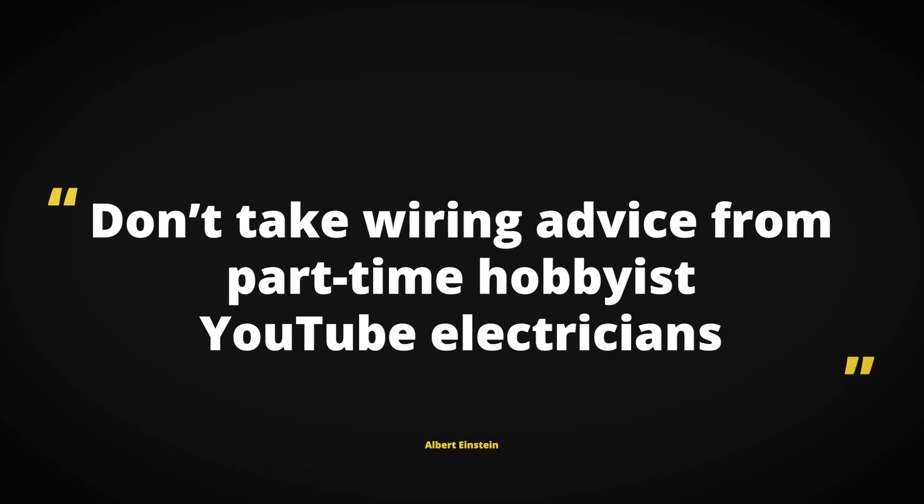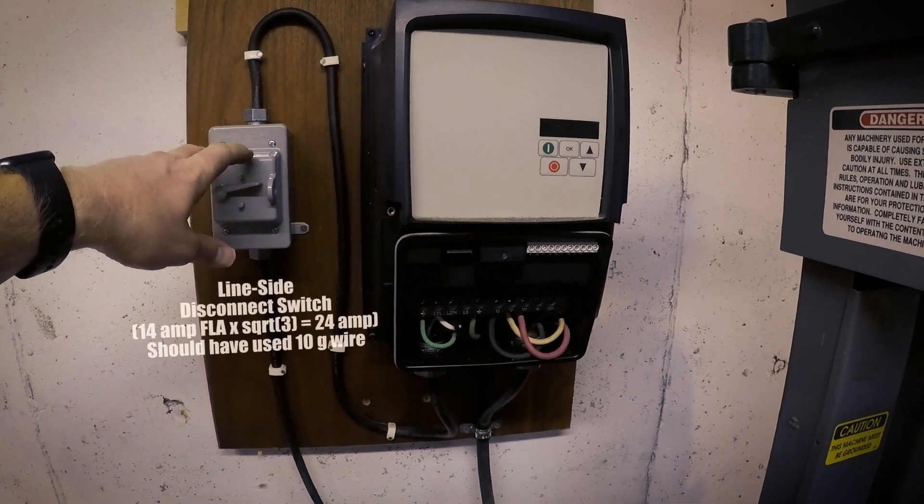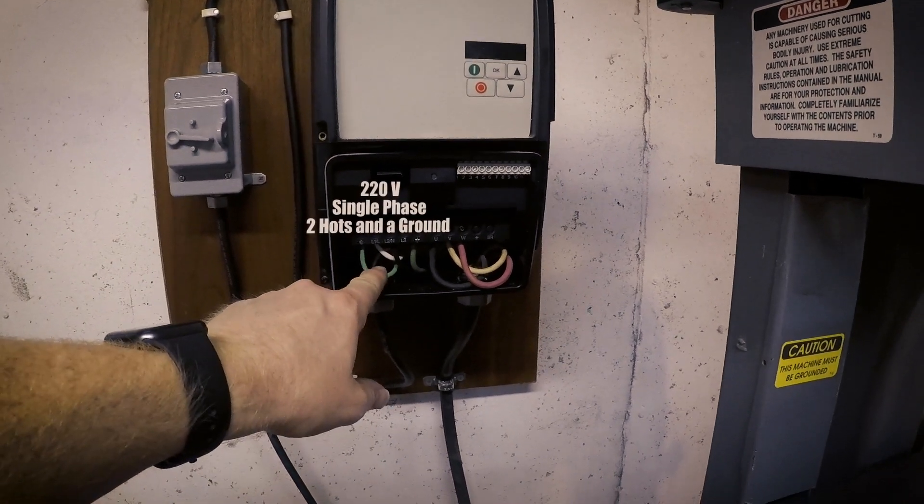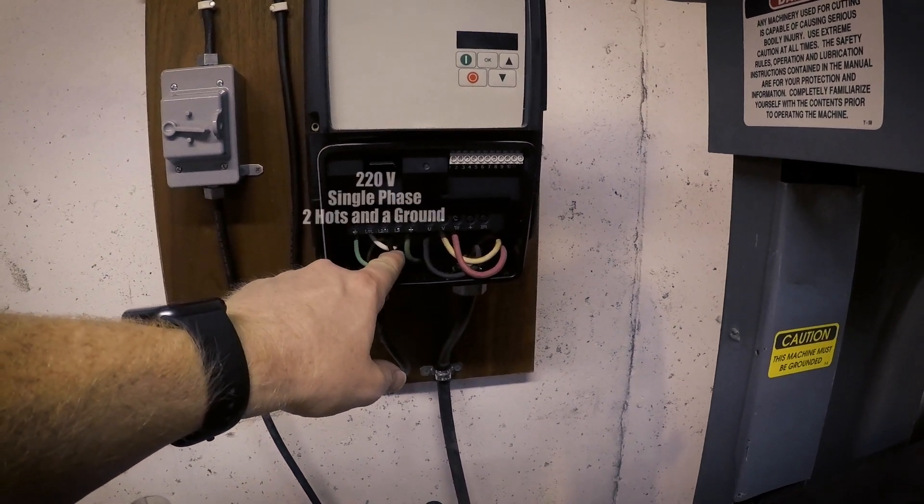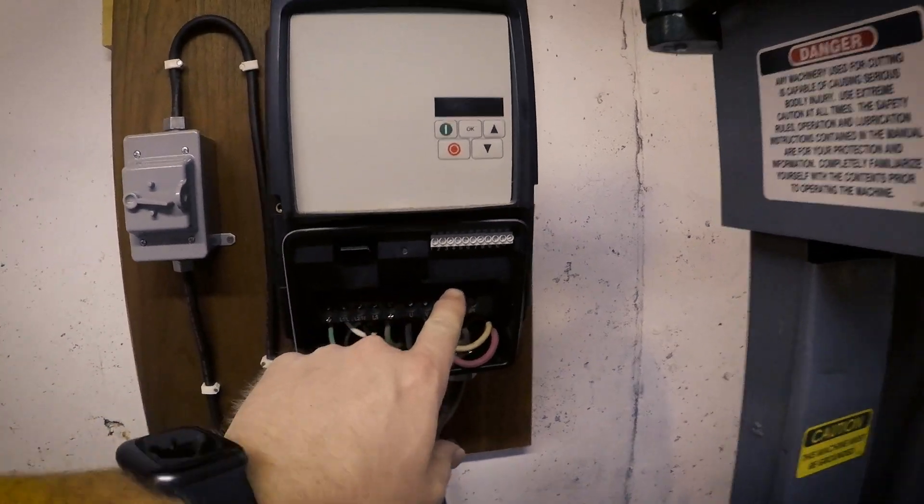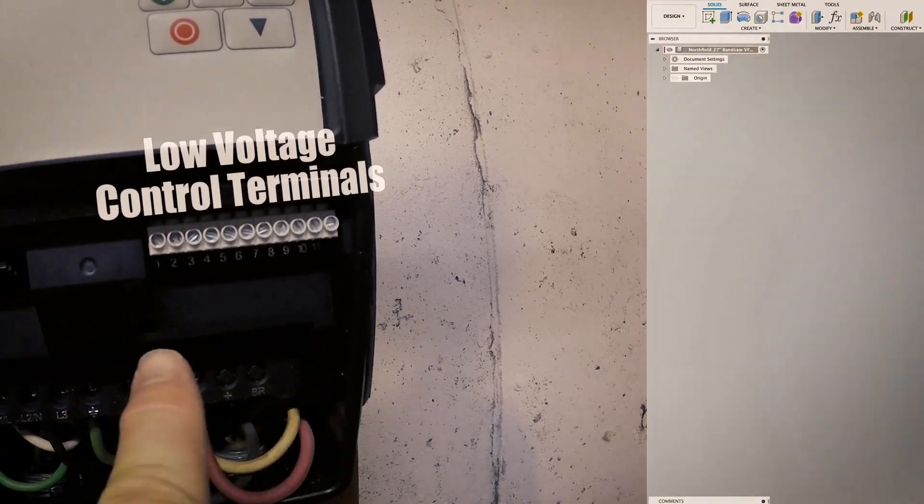With the sage advice of one of my heroes in mind, this is not going to be a how-to for wiring VFDs. I wired an on-off switch for the unit. You have two household current hot lines coming in, some magic occurs, and three phases go out to power the three-phase motor. These low voltage terminals can be used to control the VFD.